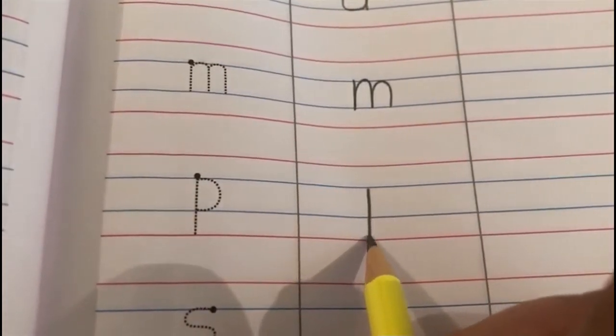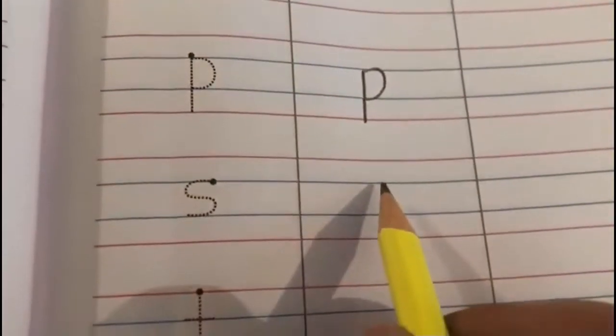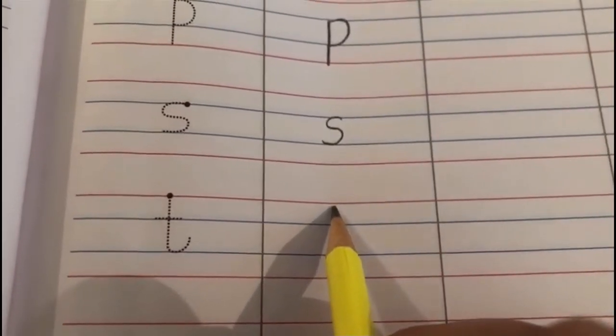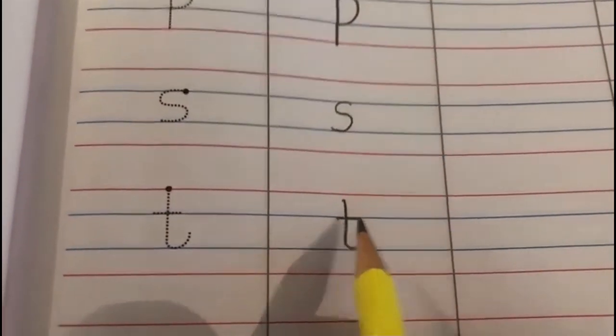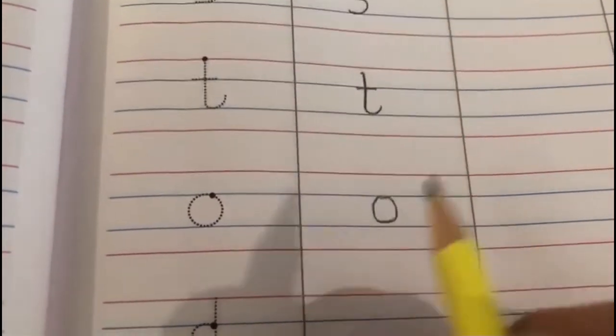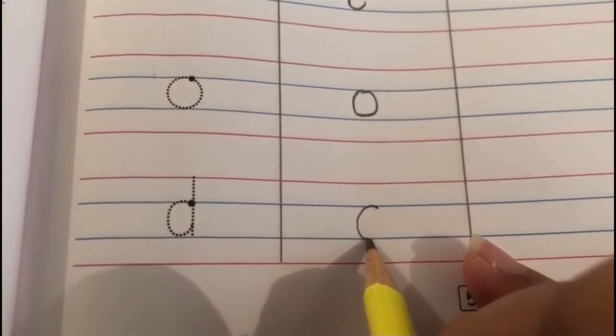Then s. Children, at the same time please say the sound of the letter. S says 's', t says 't', o says 'o', and d says 'd'.